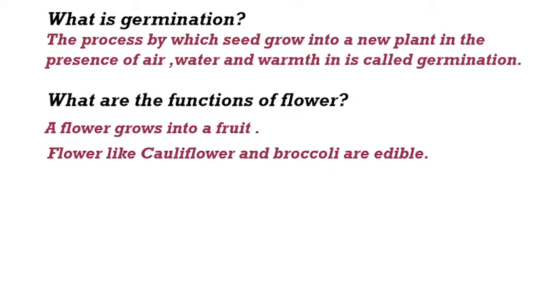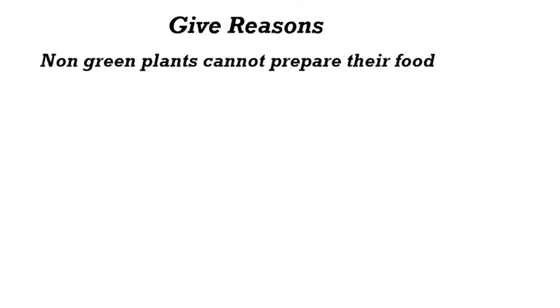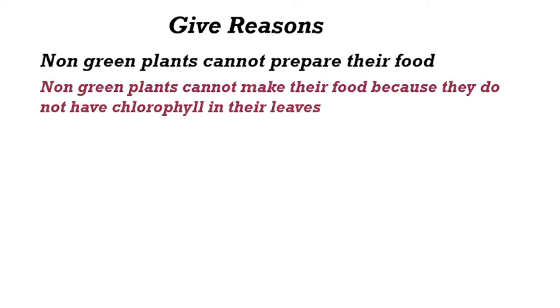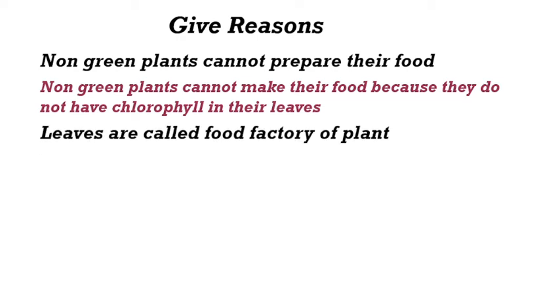Flowers like cauliflower and broccoli are edible. (Phool gobhi aur broccoli jaise phool khane ke yogya hote hain.) Give reason: why can non-green plants not prepare their food? Non-green plants cannot make their food because they do not have chlorophyll in their leaves. (Gair hare paudhe apna bhojan nahi bana sakte kyunki unke pattiyion mein chlorophyll nahi hota hai.)